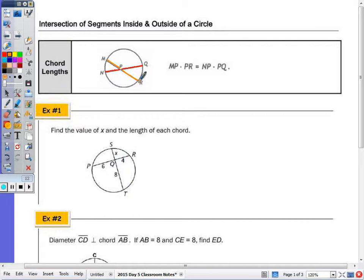The theorem says that MP times PR, so the segments that make up chord MR, when you multiply those two segments, that product is equal to the product of the segments that make up NQ. So the product of the segments of one chord is equivalent to the product of the segments of the other chord.